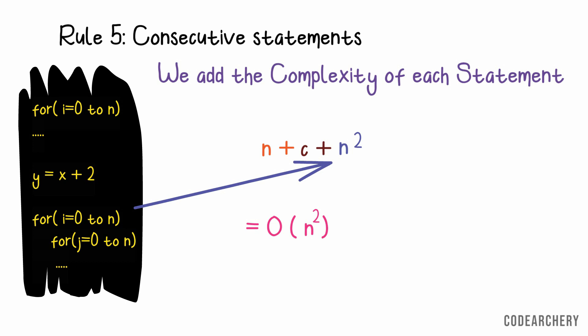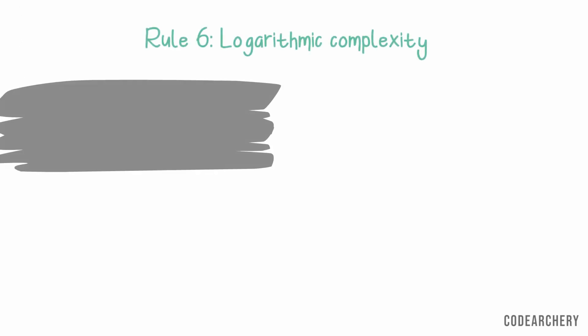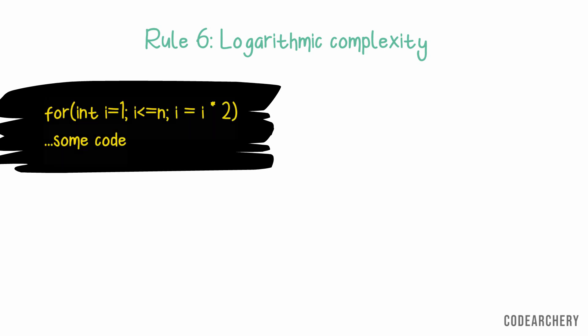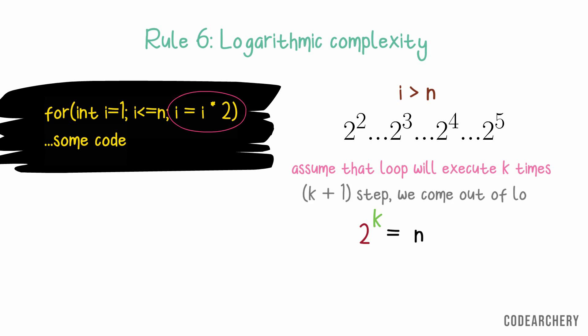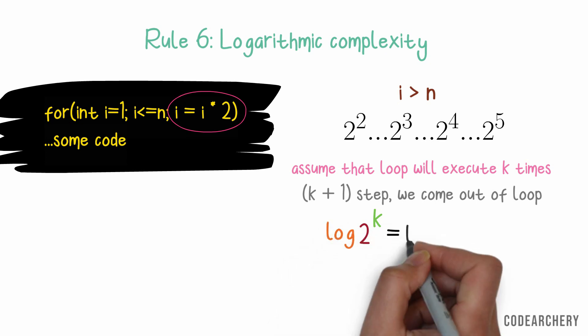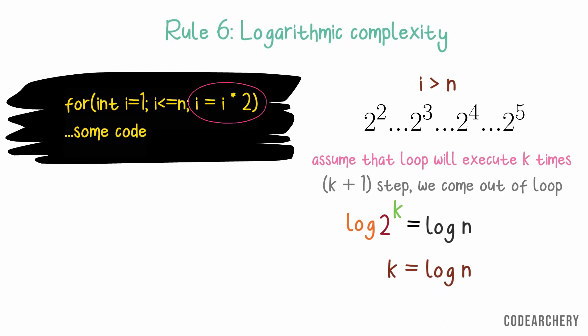Now, our last rule which is for logarithmic complexity. It's just a for loop. Can you calculate its time complexity? This loop will terminate when value of i is greater than n. But, each time the value of i doubles here. So, it will start from 2 to the power 1 plus 2 to the power 2 plus 2 to the power 3 and go on. It doubles every time. So, let's assume that loop will execute k times. So, at the kth step, 2 power k equals n because that's our loop condition. And that means that for the next step, k plus 1 step, we came out of the loop. So, taking log on both sides and solving this equation further, the answer is log n. So, this loop will take log n time.